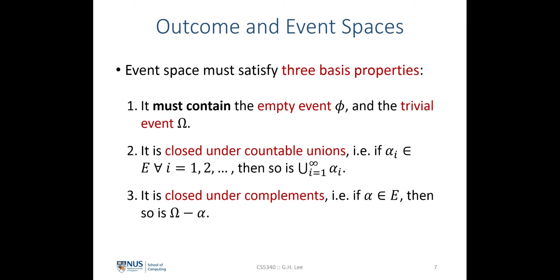An event space must satisfy three basic properties. First, it must contain the empty set — the null set where there's no outcome — and the trivial event, which is the sample space itself, containing all outcomes. Second, it must be closed under countable union: if alpha_i is in the event space for any integer i, then the union of all alpha_i must also be in the event space. Third, it must be closed under complement: if alpha_i is in the event space, then the complement of alpha_i must also be in the event space.